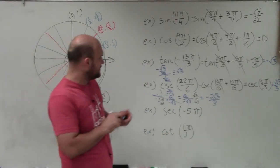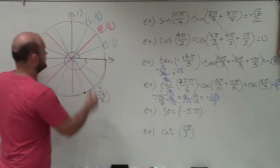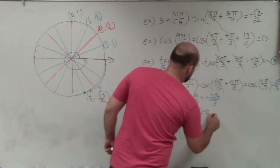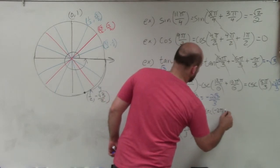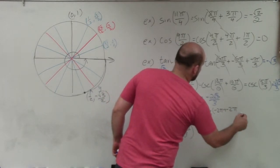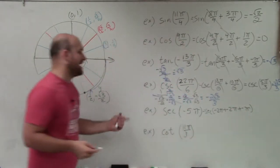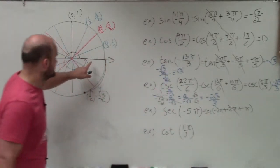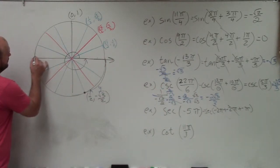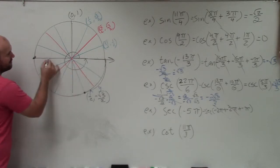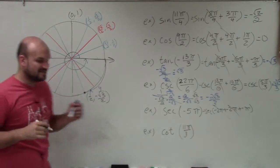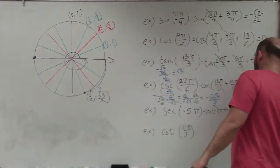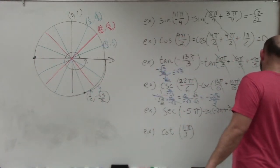For secant, notice one revolution here is just 2π. Negative 5π equals negative 2π plus negative 2π plus negative π. The two groups of negative 2π are revolutions and are dropped. So we need the secant of negative π, which lands at the point (−1, 0) on the unit circle. Secant is 1 over x, and the x-coordinate is negative 1, so the answer is negative 1.